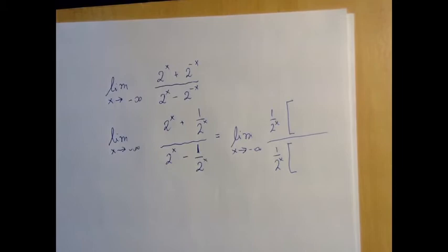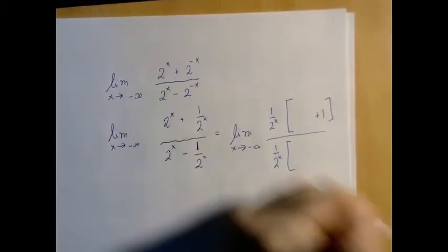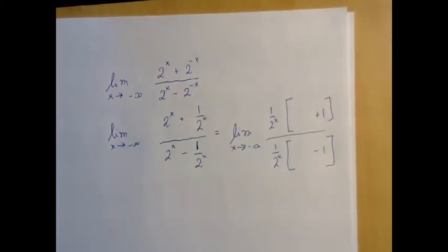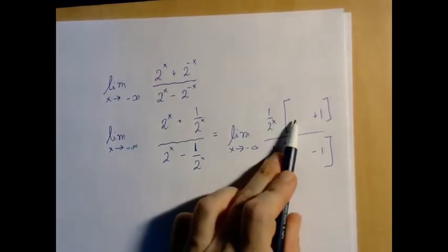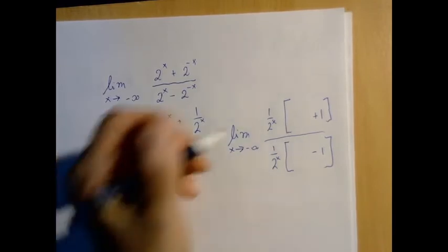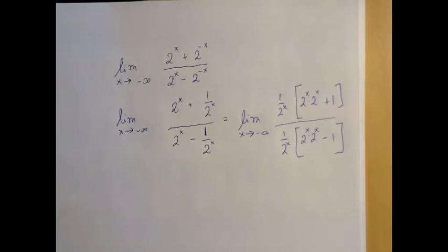And now the multiplication backwards should work. So the second pieces are the easy ones, those are just 1. And here 1 over 2 to the x, after multiplication we should get back 2 to the x. So again it's 2 to the x times 2 to the x, that's one way. And now we have cancellation.